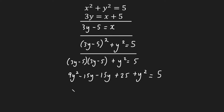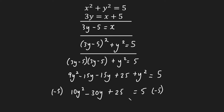Simplifying this expression now gives me 10y² — because 9y² + y² = 10y² — then −15y − 15y gives us −30y, and then +25, which equals 5. I'm then going to make this equation equal to 0 by subtracting 5 from both sides, giving us 10y² − 30y + 20 = 0. The reason I'm doing this is so I can solve this quadratic equation using one of the three methods from the previous lessons.